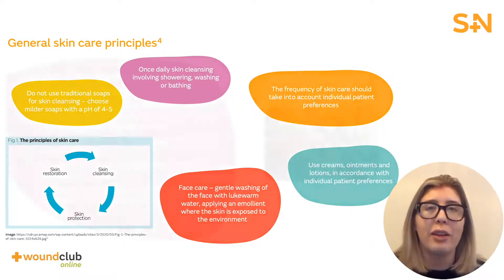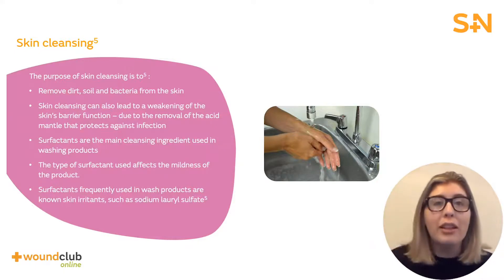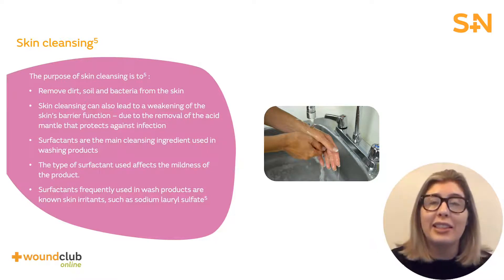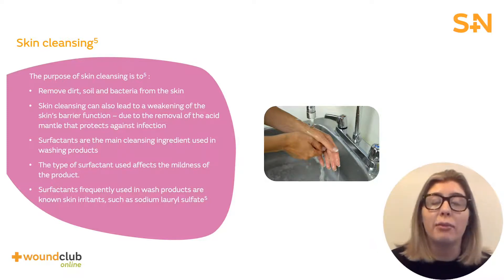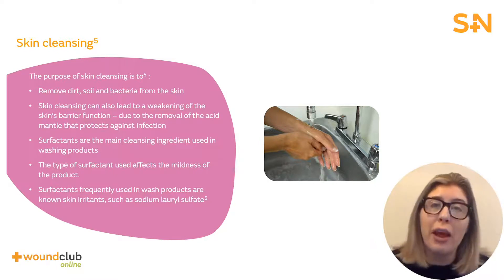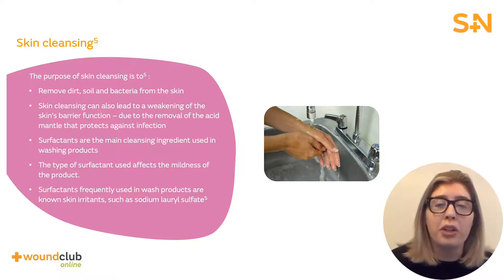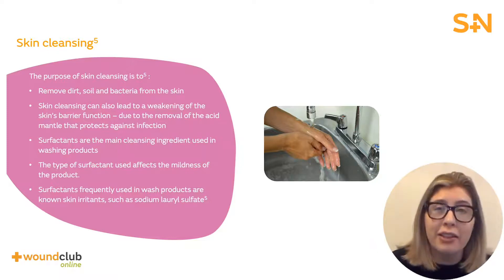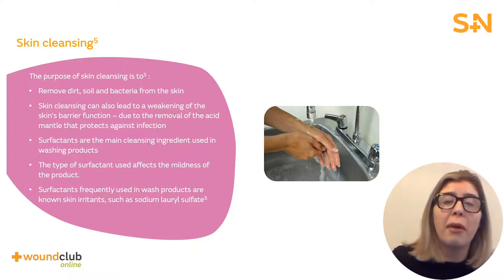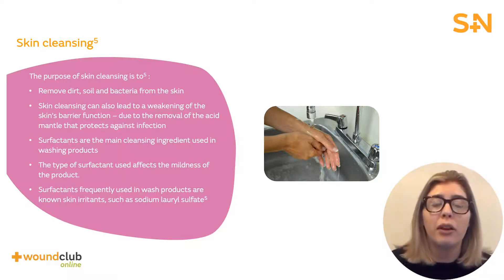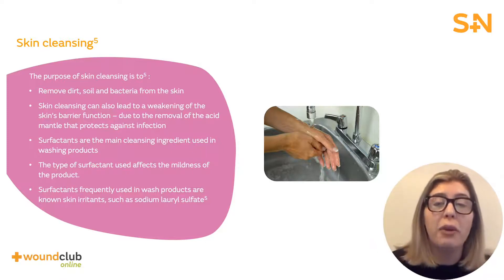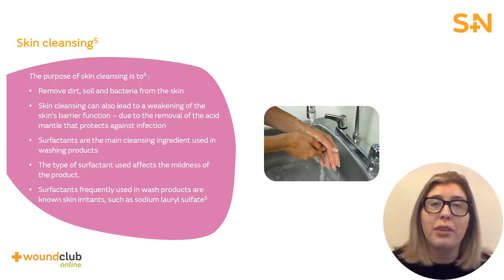We can simply advise and educate. Skin cleansing keeps the skin healthy by removing any damaging substances from the skin that can affect the acid mantle, such as dirt, soil, and unhealthy bacteria already sitting on our skin. Surfactants tend to be the main cleansing ingredient in washing products — they can be known skin irritants, and the type included can range in mildness, but it is so important that you rinse them off and don't leave them sitting on the skin. This can lead to a weakening of the skin's barrier function, removing the acid mantle that protects against infection and making the skin vulnerable.